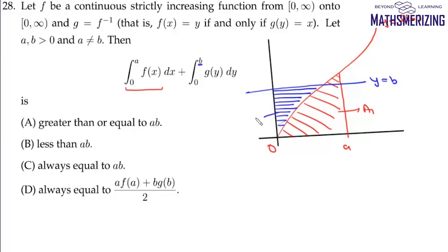Now this integral from 0 to a of f(x)dx plus 0 to b of g(y)dy is a₁ + a₂. We talk about the area of this rectangle. The area of this rectangle is ab.